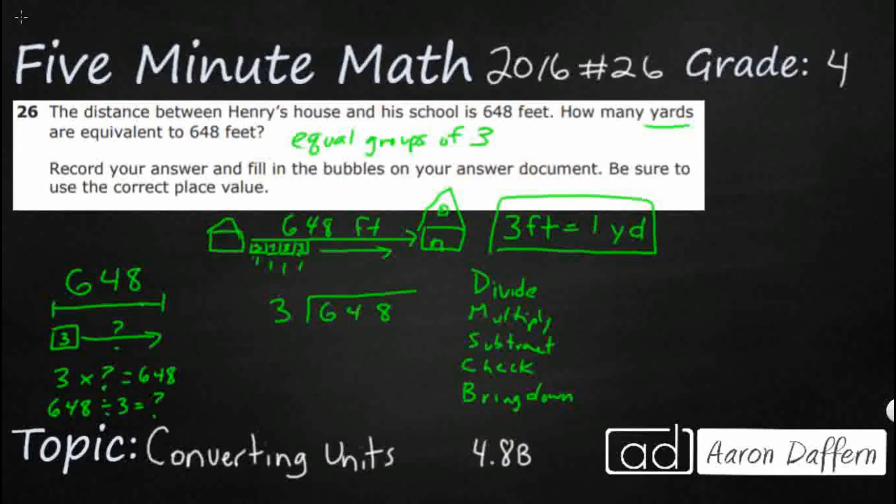So 3 goes into, start this first one, 6. Yeah, actually it does. It goes in there twice. 3 times 2 is 6. Subtract. We got nothing left. Check. Is that 0, that difference less than our divisor? Yes, it is.